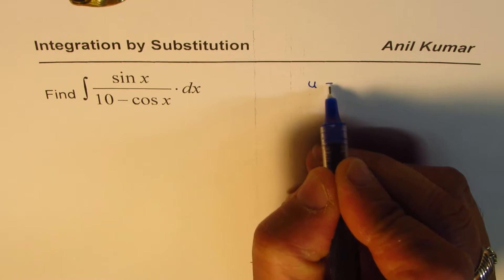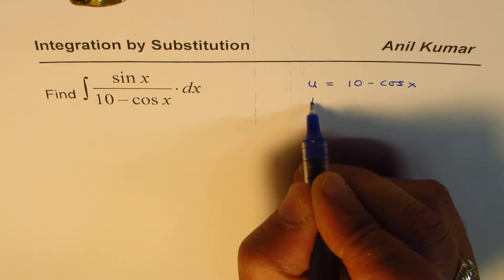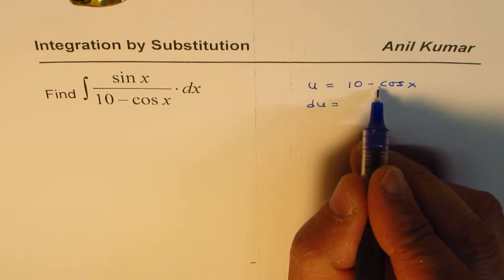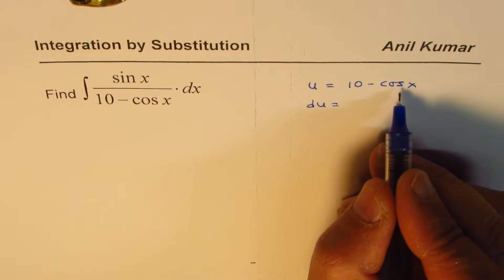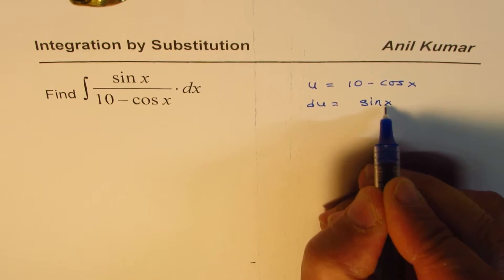So I could substitute u equals 10 minus cos x. du will equal the derivative - this is zero, derivative of minus cos x... cos x is minus sin x, that will make it positive, so we have sin x dx.